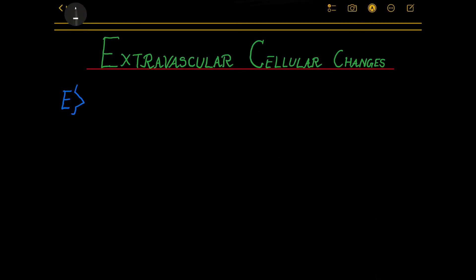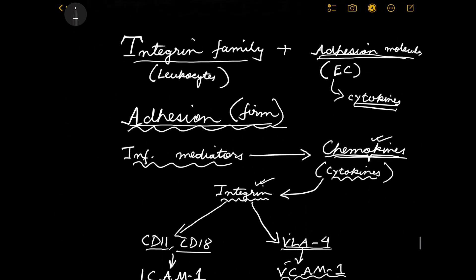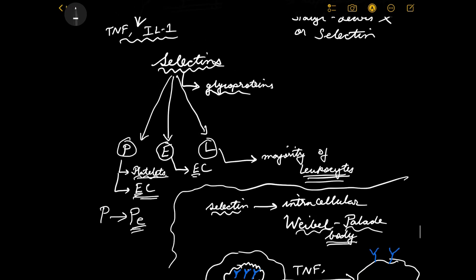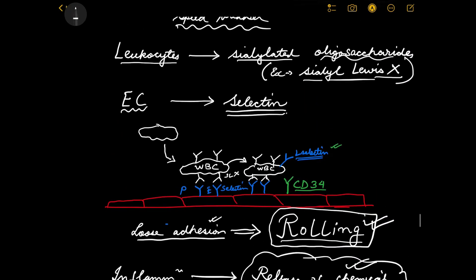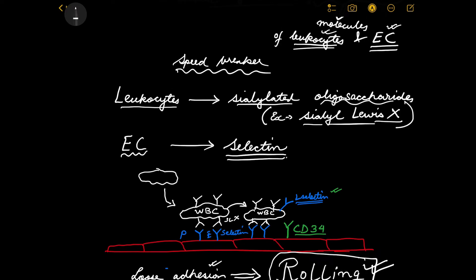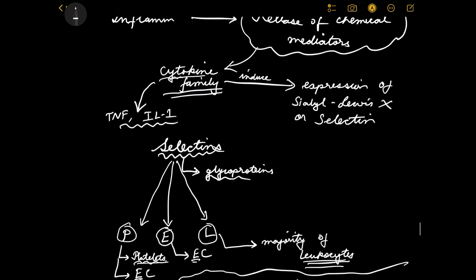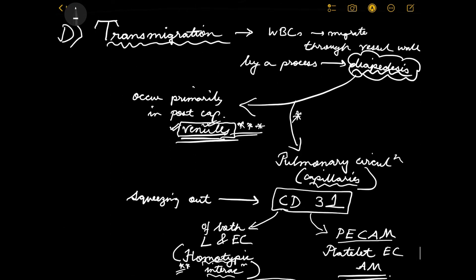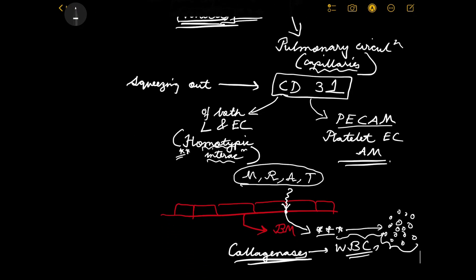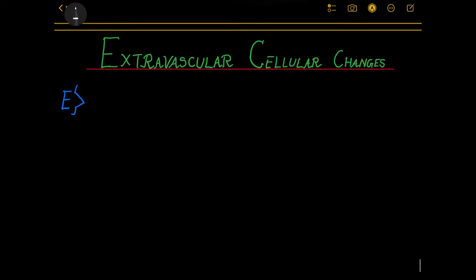Now let's discuss the extravascular cellular changes. In our last discussion, we talked about the intravascular cellular changes, and before that, the vascular changes occurring in acute inflammation. We saw that there are steps the leukocytes undertake to extravasate from blood vessels - those are the intravascular cellular changes. But now, after transmigration and diapedesis, the leukocytes are finally free, and the next series of steps begins: the extravascular cellular changes.